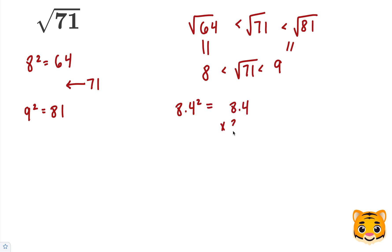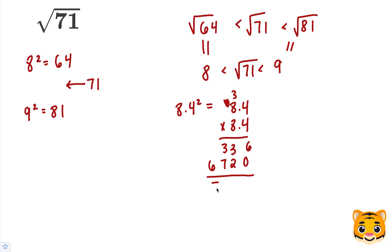8.4 squared is 8.4 times 8.4. 4 times 4 is 16, carry the 1. 8 times 4 is 32, plus 1 is 33. Add our 0. 8 times 4 is 32, carry the 3, and then 8 times 8 is 64, plus 3 is 67. When we add these together, we get 70.56, which is very close to 71. So we can approximate: 70.56 is approximately 71.